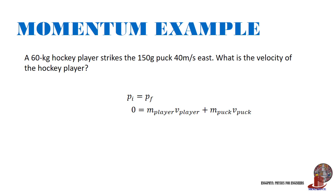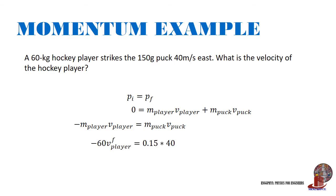Placing the player's term on the other side, we get: minus mass of the player times his velocity equals mass of the puck times its velocity. Plugging values: negative 60 times velocity of the player equals 0.15 times 40, which gives us the final velocity of the player equal to negative 0.1 meters per second. This means he is moving to the west.